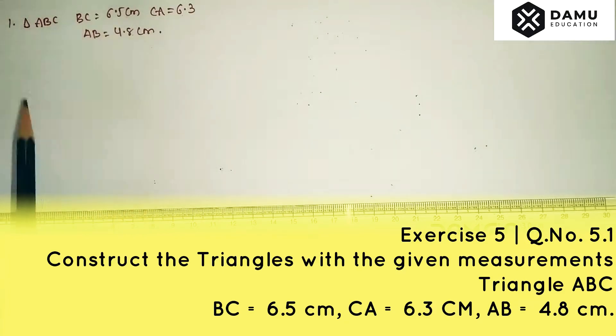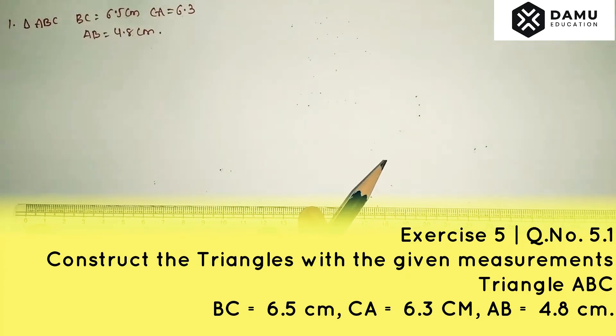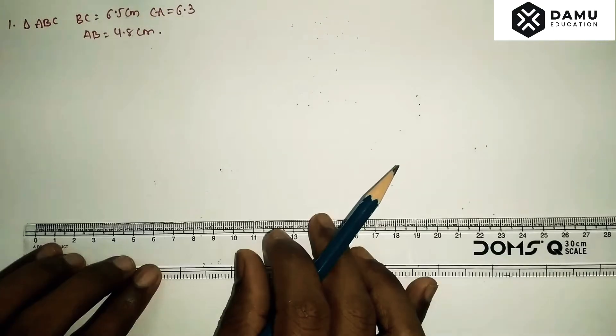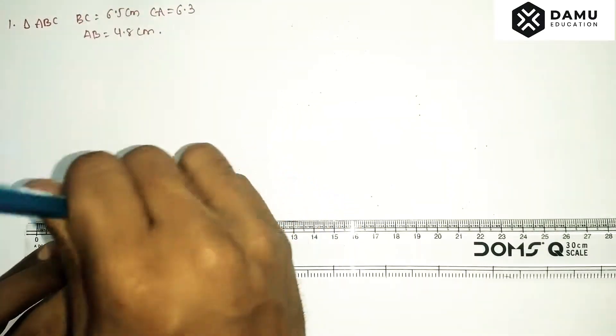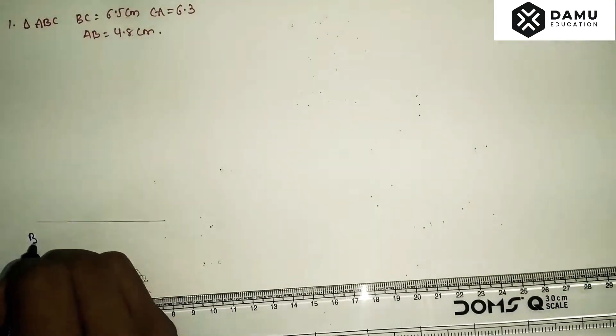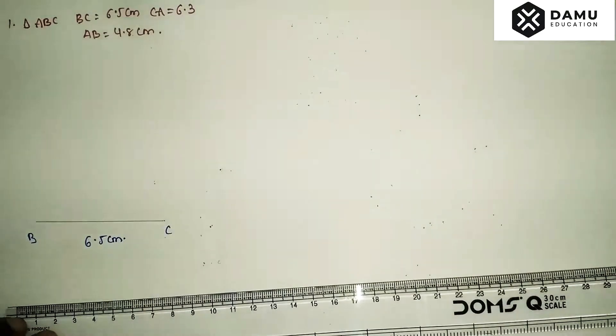BC is more, so we are going to draw BC equals 6.5 cm. Keep your scale horizontally, 6.5 cm. So that is BC equal to 6.5 cm.